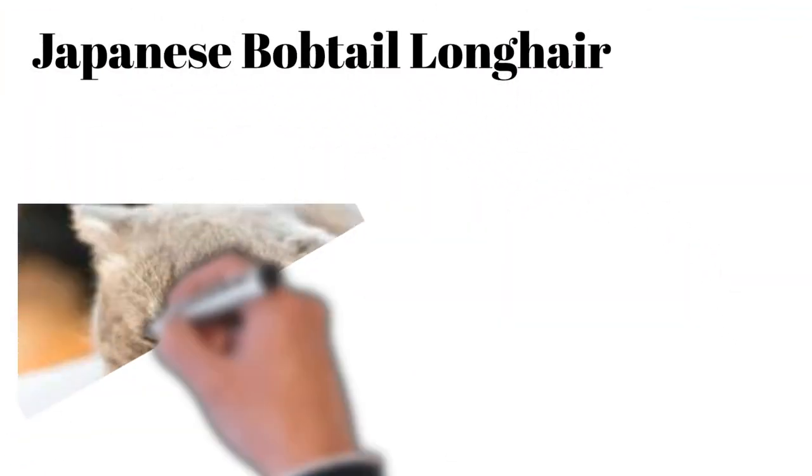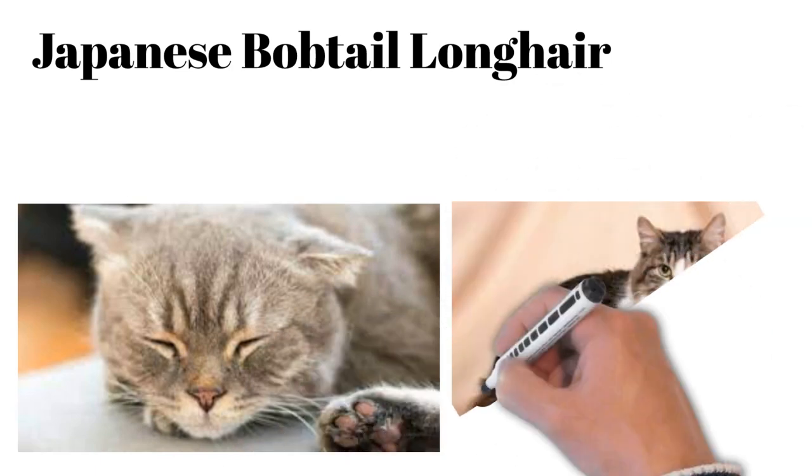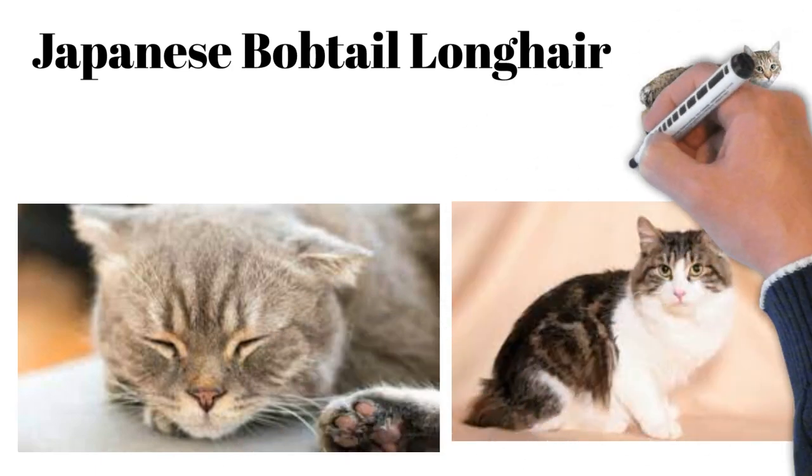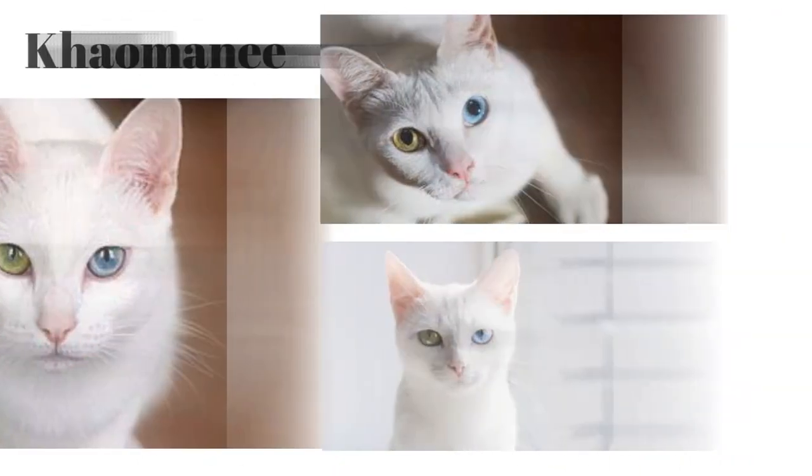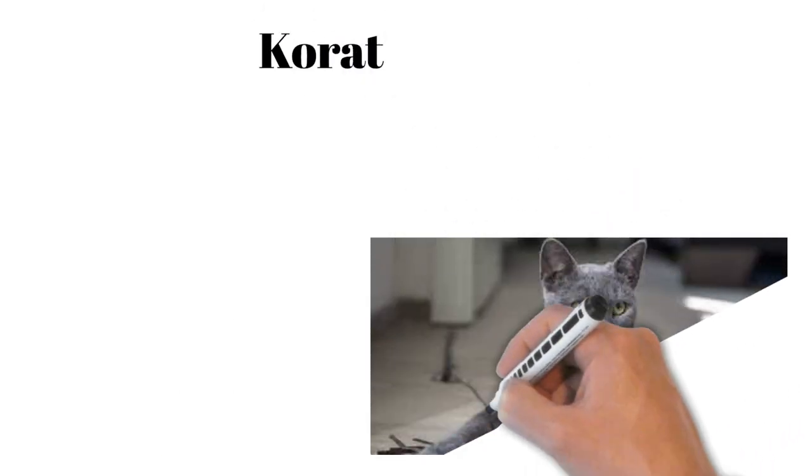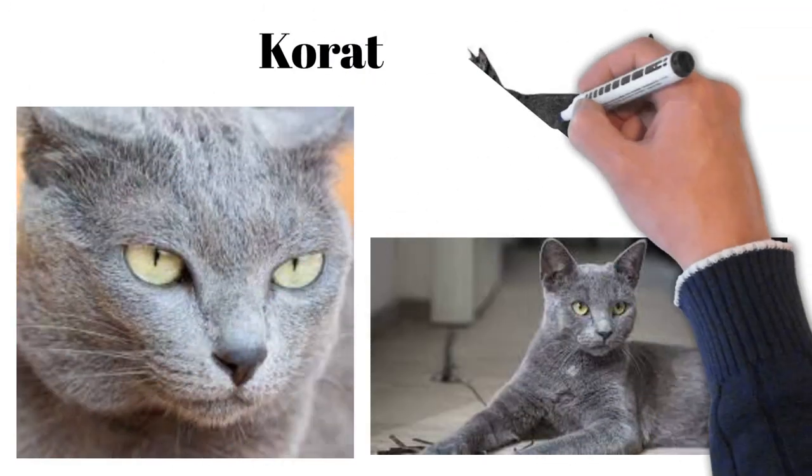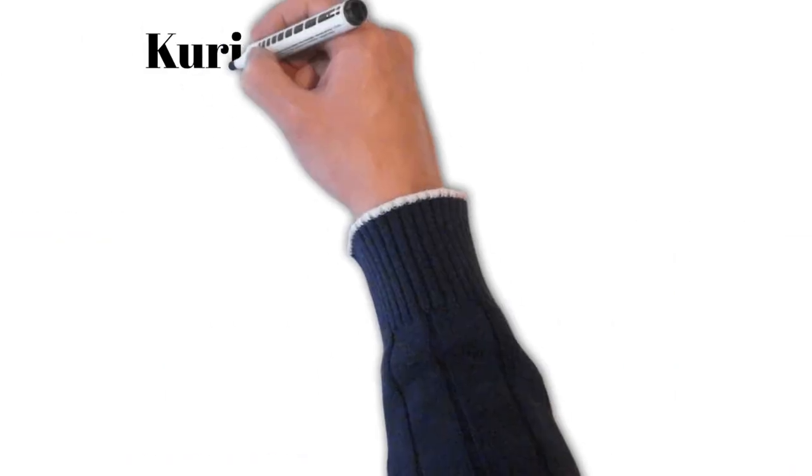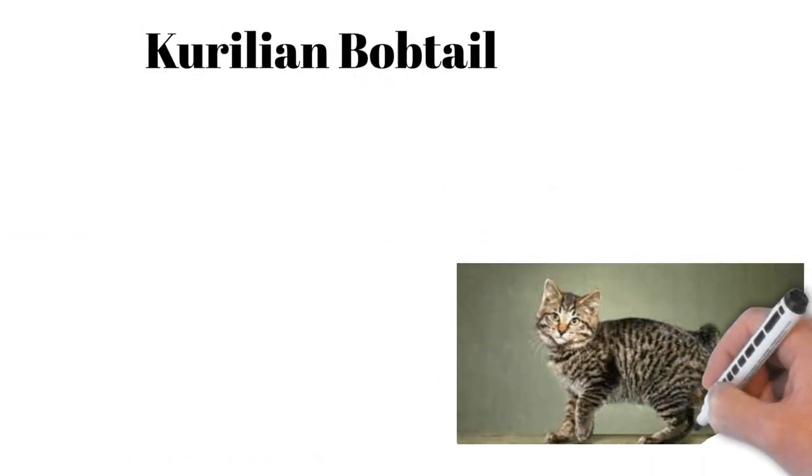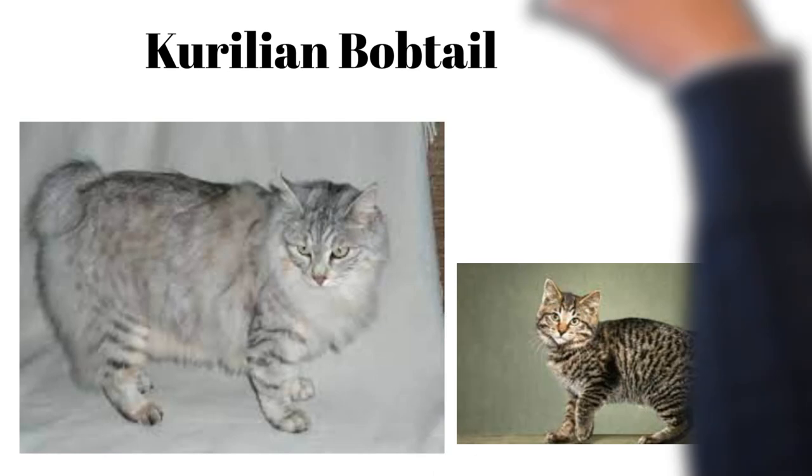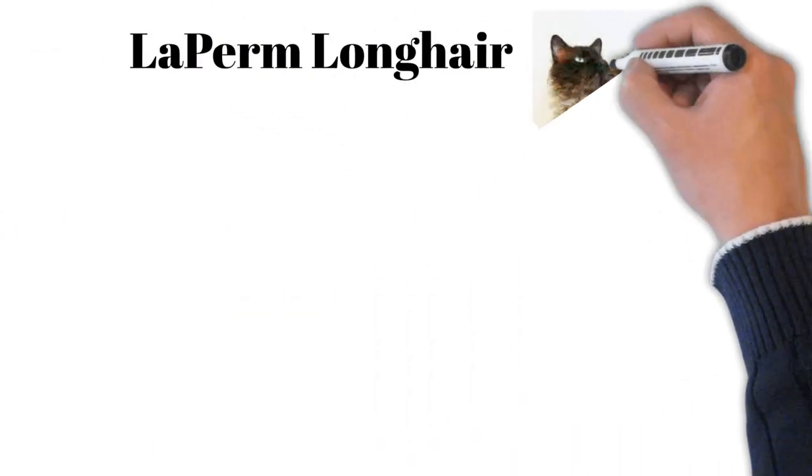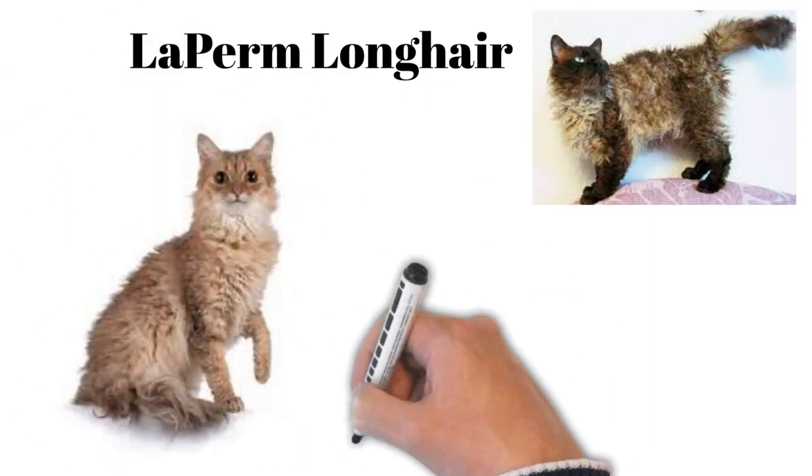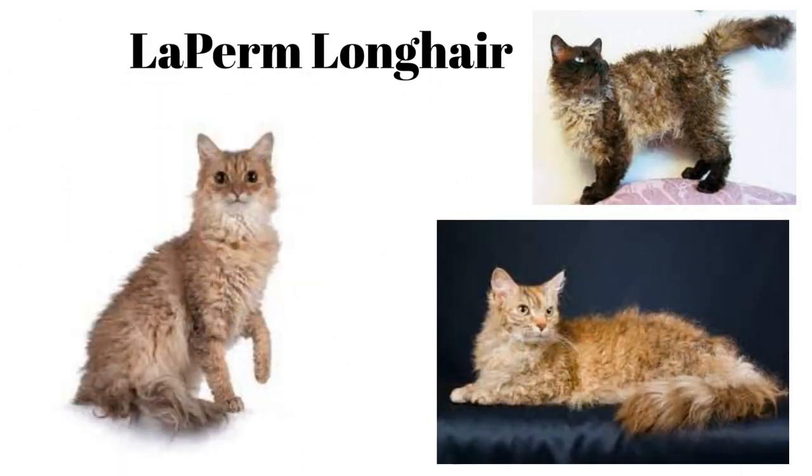Japanese Bobtail: long-coated, symbol of luck in Japan, sociable, vocal. Khao Manee: white coat, odd or blue eyes, rare, affectionate. Korat: silver-blue coat, heart-shaped face, loyal, gentle, and alert. Kurilian Bobtail: short-tailed, strong hunter, friendly, good with families. LaPerm Longhair: curly, long coat, affectionate, curious, enjoys being involved.